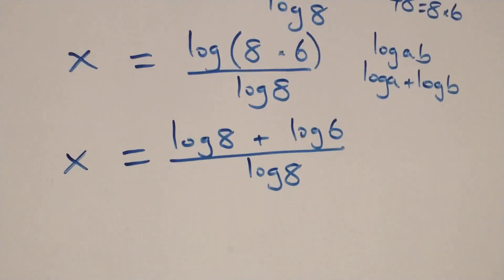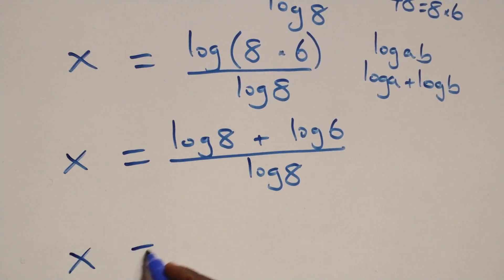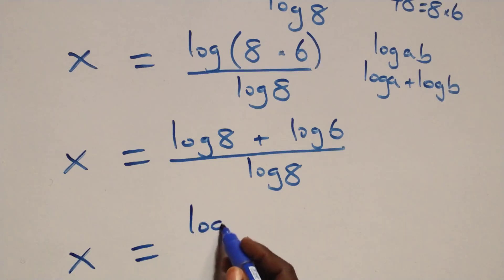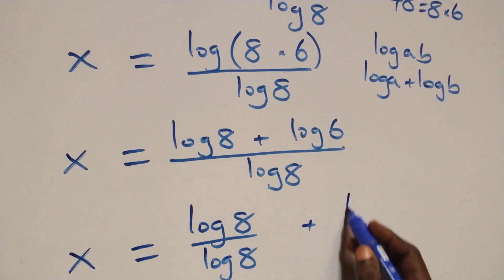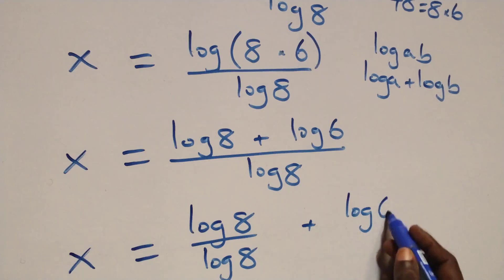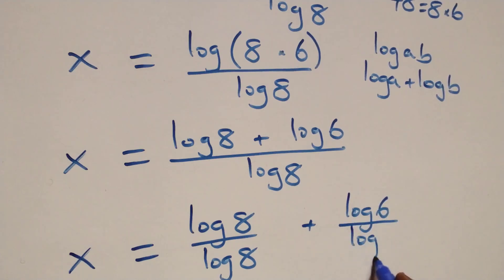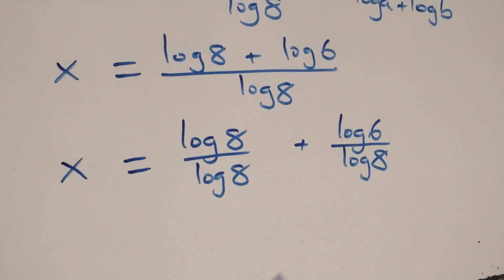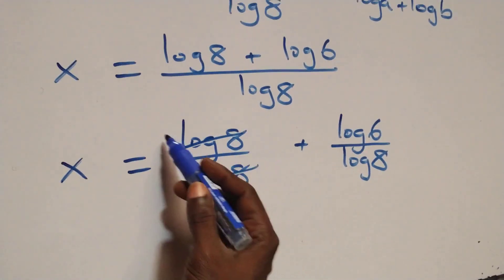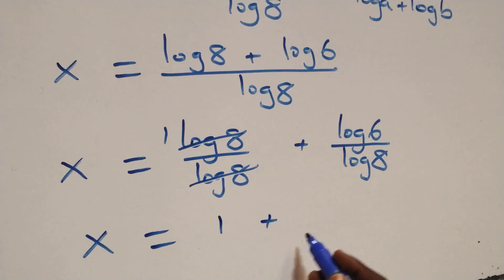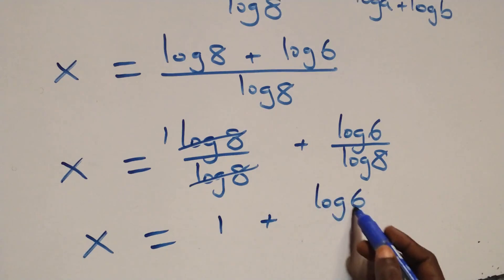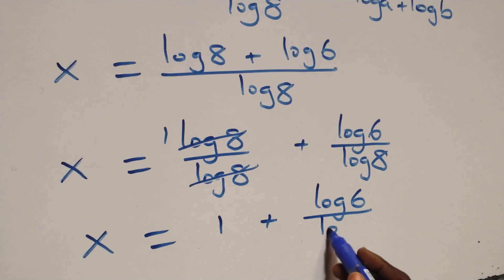Here we have log 8 over log 8, which cancels each other, leaving 1. All we have here becomes x equals to 1 plus log 6 over log 8.